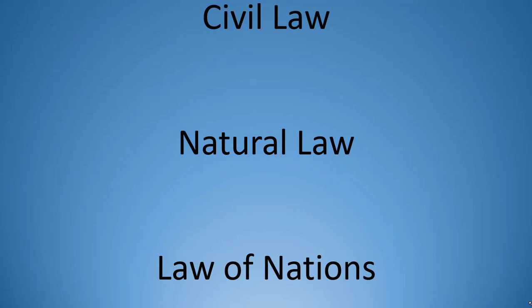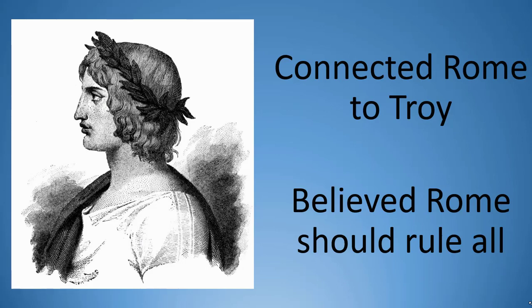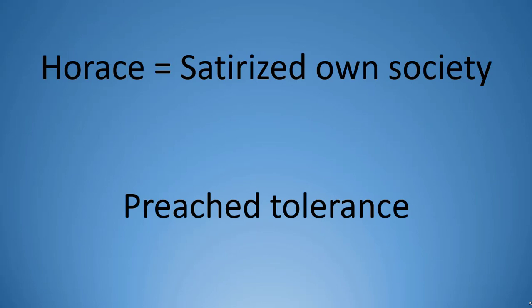Latin literature also played a role in the process of Romanization, particularly among the upper classes who could read. One of the most famous Roman authors, Virgil, connected Rome to the distant past by envisioning his title character Aeneas as a survivor of the Trojan War who traveled to Italy and founded Rome. Virgil also claimed that Rome's unique contribution to the world would not be in philosophy or sculpture but rather in government, and it was thus Rome's destiny to rule over all people. A contemporary of Virgil, Horace, satirized his own society, highlighting how weak and foolish human beings can be, but stressing tolerance of that fragility.